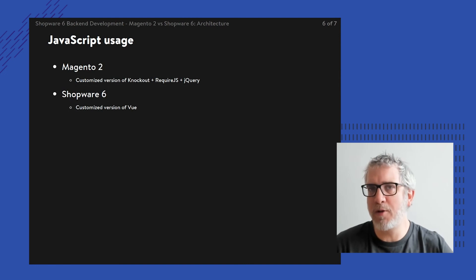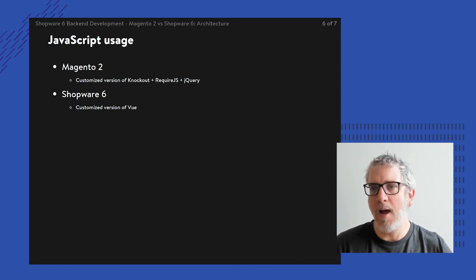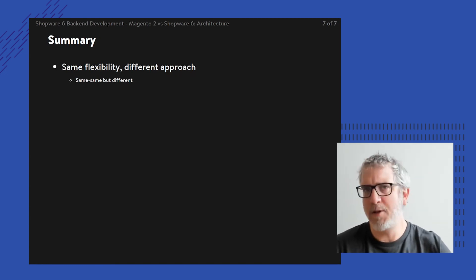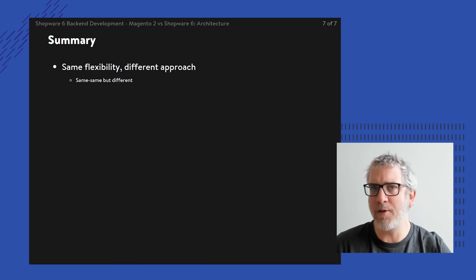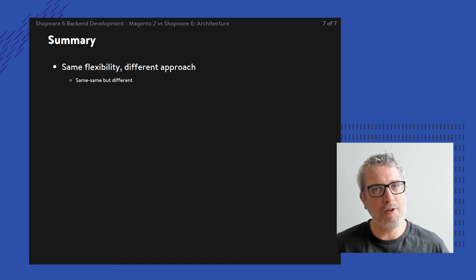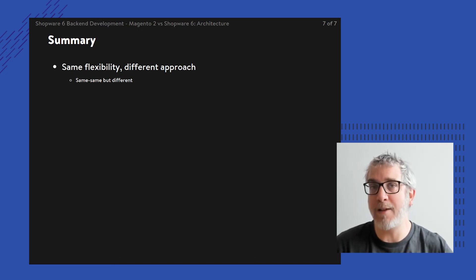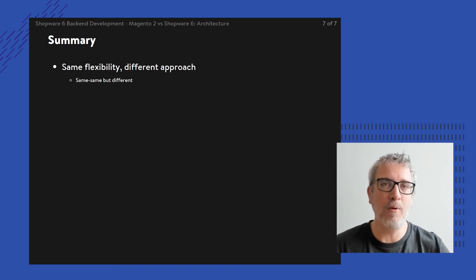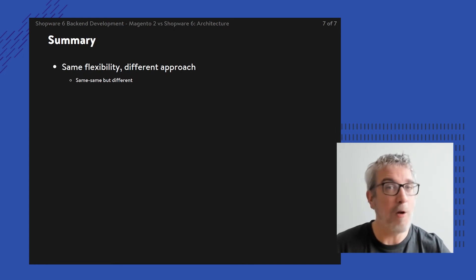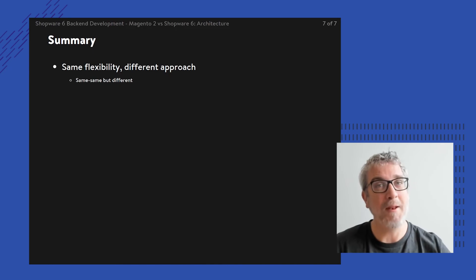We've gone through a couple of those different topics and there's obviously much more to tell. In this lesson, I simply wanted to show that a lot of the features within Magento are comparable with features in Shopware. However, the devil is always in the details. So let's move on into other lessons and focus upon a couple of topics more intensively, to see what the real differences are and to come up with code comparisons. Stay tuned for more — hope you liked it, and see you in the next one!